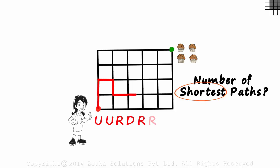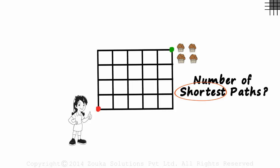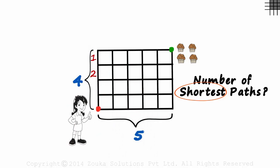Up, up, right, down, right, right, right, right, up, up, up — eleven units, more than nine. So for the shortest paths, we can either travel right or up, not left or down. Now going back to our previous point: the shortest path will cover nine units. What is this nine? It is the sum of the number of columns and the number of rows. This grid has five columns and four rows — five plus four is nine. So now you know what a shortest path is.